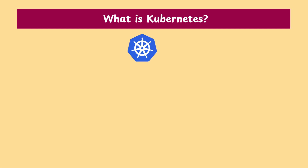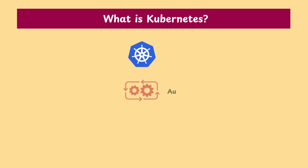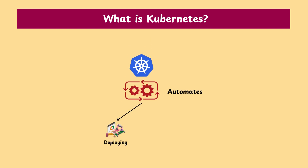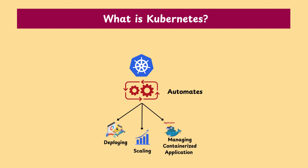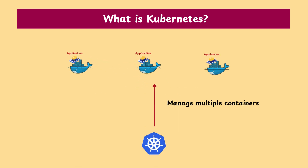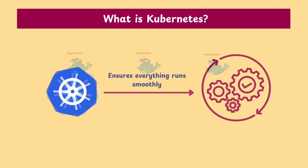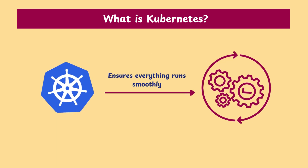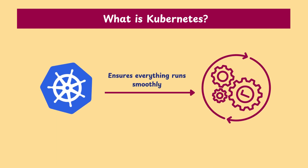So let's get started with what is Kubernetes. Kubernetes is a platform for automating the deployment, scaling, and management of containerized applications. It helps manage multiple containers across many machines and ensures everything runs smoothly.